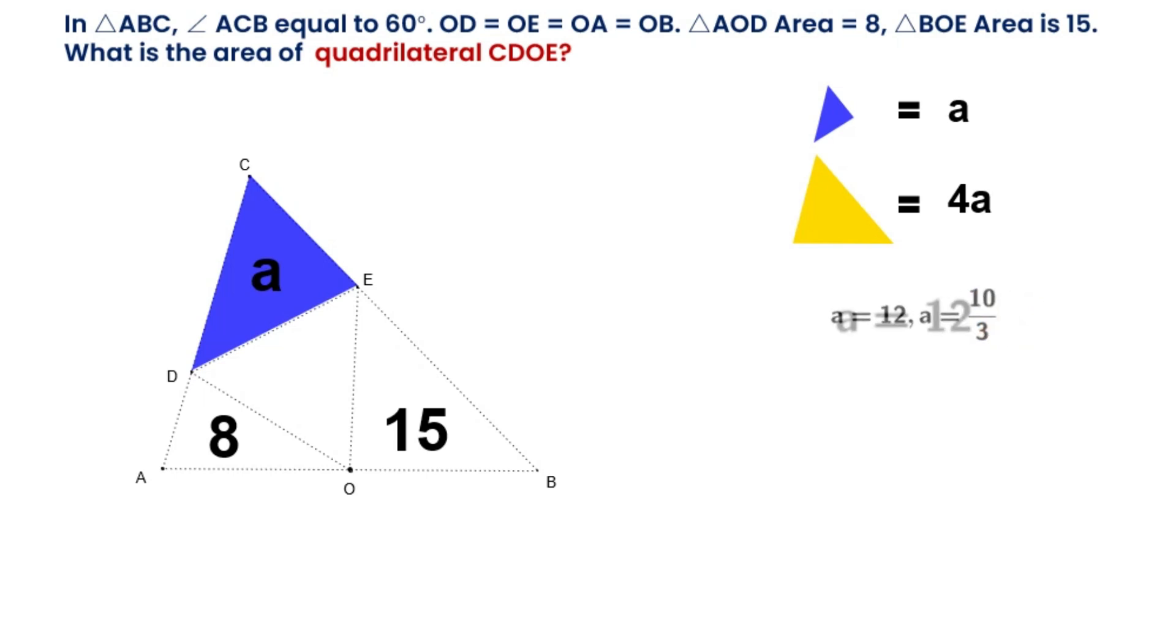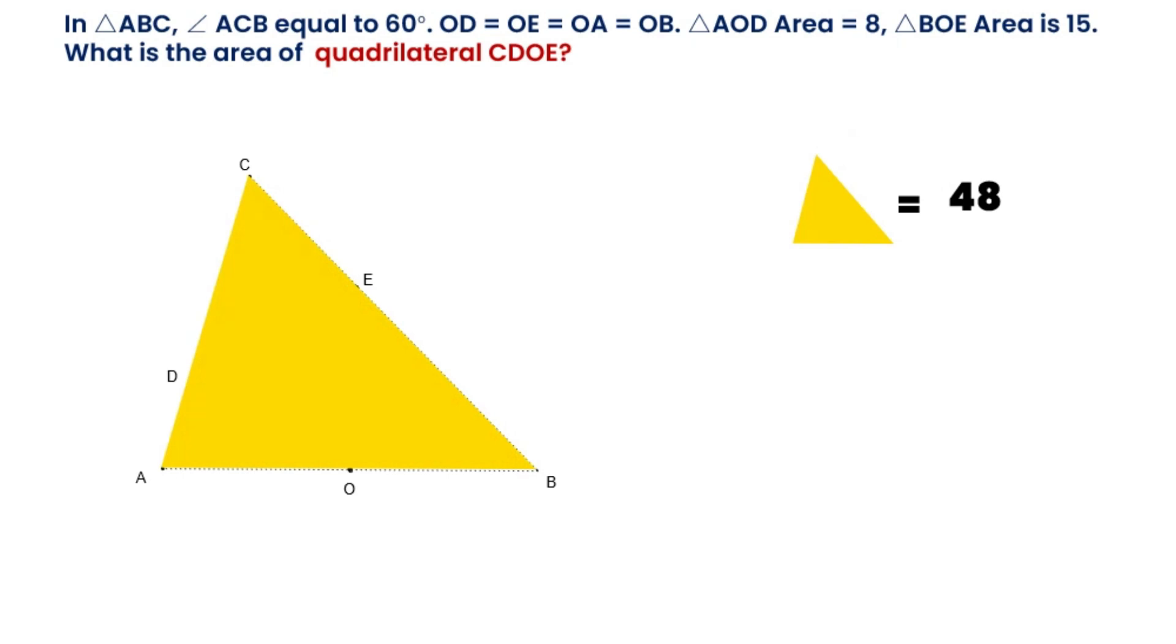When A equals 12, the area of triangle ABC is equal to 4 times 12, which is equal to 48. The area of quadrilateral CDOE equals 48 minus 8 minus 15, which equals 25.